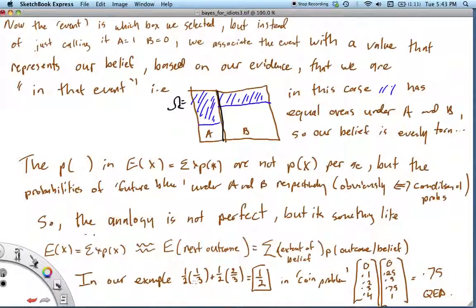To complete my analogy, it's something like the expected value of X equals sum of X times P(X), is kind of like our expected probability for the next outcome, or our prediction for the next outcome, if you will, is the sum of the extent of our belief about what event we're in, times the probability of the outcome that we're interested in, given our belief in the event that we're in. In our example, our posteriors were a half and a half, and our conditionals were two-thirds and one-third. So we collide the posteriors with the conditional, and we get a half. In the coin problem from the exam, you collide your posteriors with the conditionals, and you get 0.75.